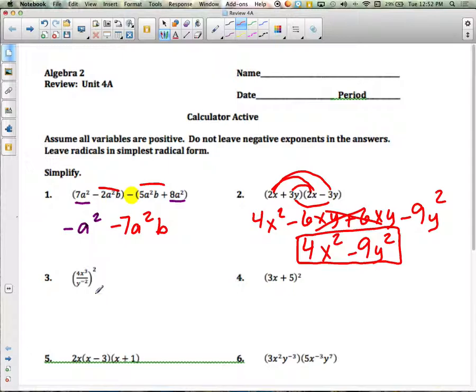Alright, question number three. We've got 4x cubed divided by y to the negative 2 power raised to the third power. Anytime you see a parenthesis and an exponent, you must multiply. The rule that we're using is this one, a to the m raised to the n power is equal to a to the mn.